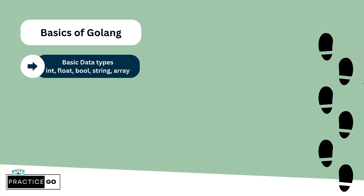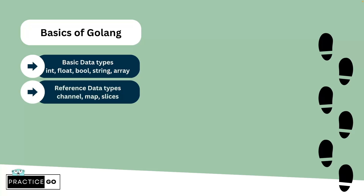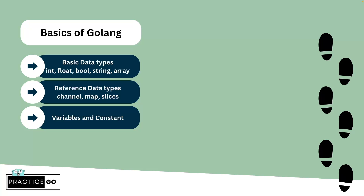For the basics of Golang, you can start with the basic data types. In Golang you have int, float, bool, string, array, and a few more. Then there are reference data types. In Golang you will find some new data types like channel, map, and slices. These are reference data types — when you initialize them, it returns a pointer instead of a value.